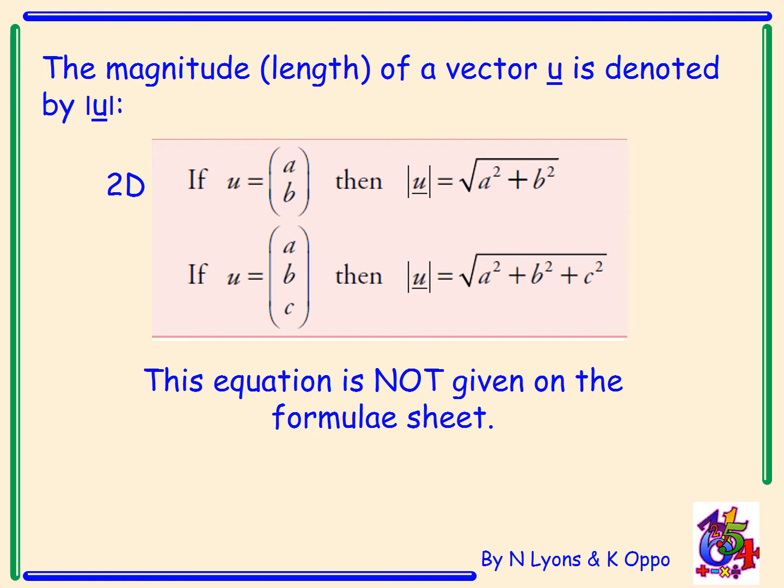However at higher level we'll now be working with vectors in three dimensions. So if you have a vector u with components a, b, c then the magnitude of that vector u equals, and again you just take the three components, square them, add them and take the square root. So that gives you the square root of a squared plus b squared plus c squared. So this is like Pythagoras in three dimensions. Now this equation is not given on your higher formula sheet so it's something you really need to commit to memory and know how to use.